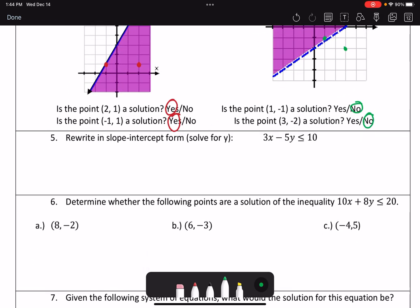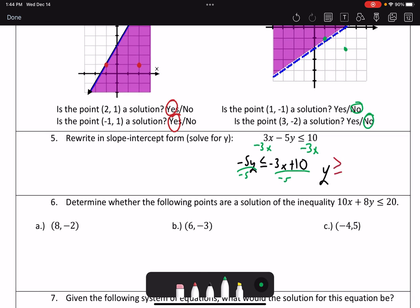Number 5 wants us to rewrite this in slope-intercept form, which is the same thing as solving for y. So I'm going to subtract 3x from both sides. That leaves me with negative 5y is less than or equal to negative 3x plus 10. And then I'm going to divide by negative 5. But remember, if I divide by negative 5, I've got to flip my inequality symbol. So y is now greater than or equal to, well, negative 3 divided by negative 5 doesn't simplify, so I'm just going to leave that as 3 over 5x. My negatives do cancel each other out. 10 divided by negative 5 is going to give me negative 2. So this would be my slope-intercept form of that linear inequality.